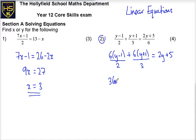I've got 3 lots of y minus 1, plus 2 lots. It's 2 lots because it's the 6 divided by 3, y plus 1, and then I've still got 2y plus 5 on this side.